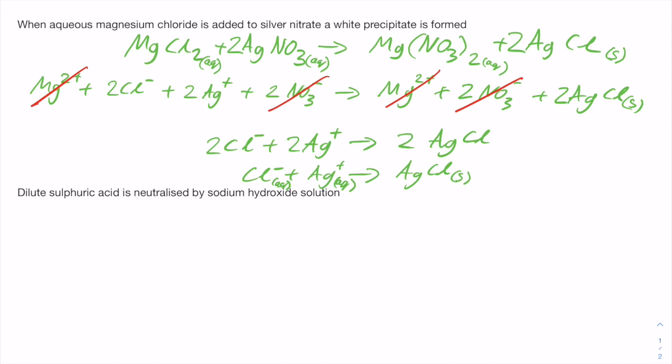Look at the second example. We've got dilute sulfuric acid neutralized by sodium hydroxide, so we'll do the same process again. We'll write out the equation in full, so we've got H2SO4 plus NaOH making Na2SO4 sodium sulfate and water.